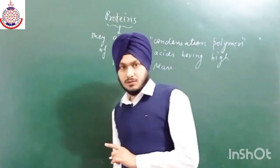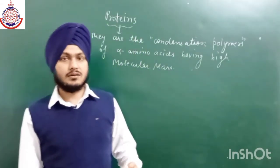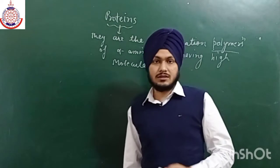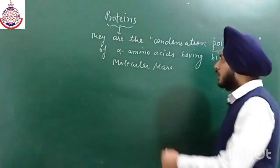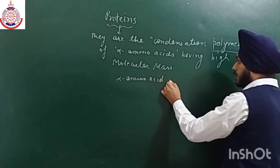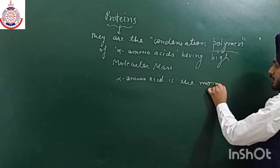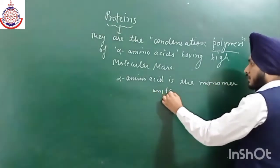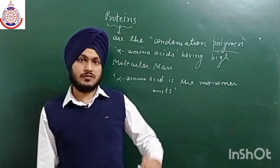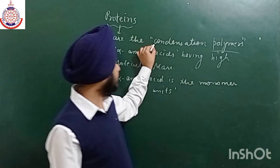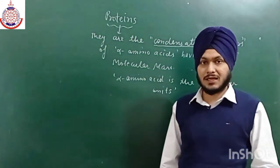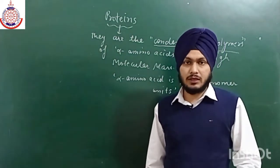Proteins have high molecular mass because of a large number of alpha amino acids. They are polymers, meaning they are made up of a large number of small units known as monomers. So alpha amino acid is the monomer unit. Monomers are the repeating units for a polymer, and by the repetition of this monomer we can get the structure of a complete polymer. Condensation means there is elimination of some small species like water, ammonia, or some other species.